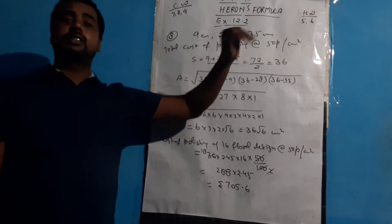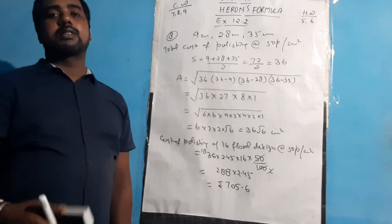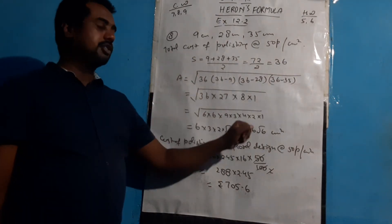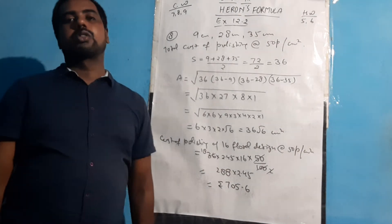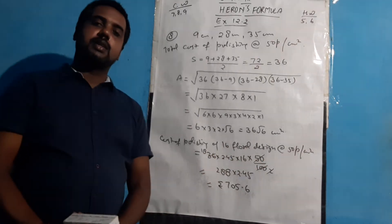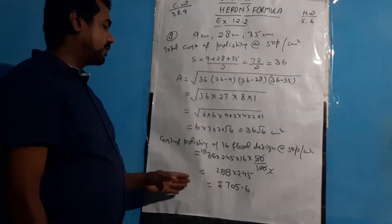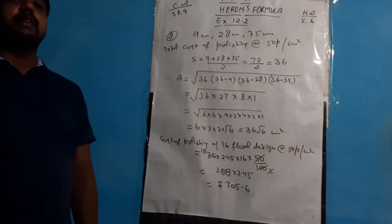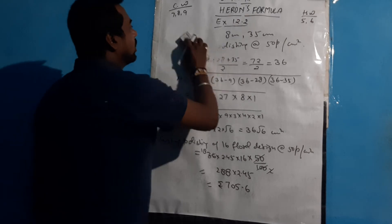To recap Question 8: the sides of the triangular floral design were 9 cm, 28 cm, and 35 cm. First I calculated the area of one design as 36√6 cm². Multiplying by 16 and then by 50 paise per cm² (converting to rupees by dividing by 100), and putting √6 = 2.45, I got the final cost as 705.6 rupees.